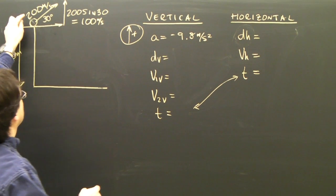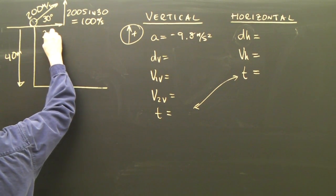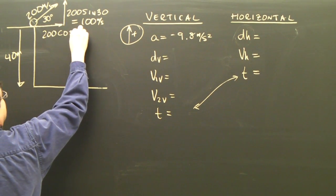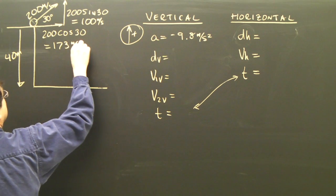The adjacent side is always the vector times the cosine of the angle. So this one's 200 cosine 30, which equals 173 meters per second.